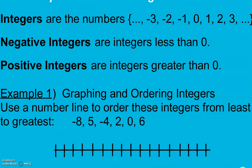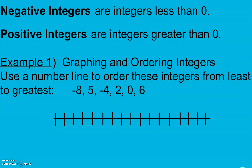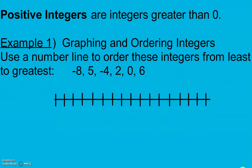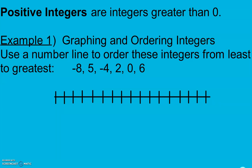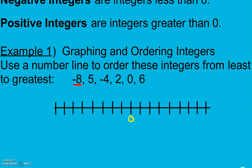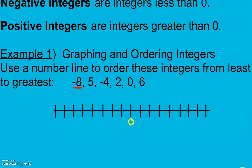In Example 1, we're going to graph and order integers. Use a number line to order these integers from least to greatest. I'll put 0 in the middle as a frame of reference. Negative 8, since it's negative, is less than 0 — we go to the left: negative 1, negative 2, negative 3 — we go 8 places over. This right here is going to be negative 8.